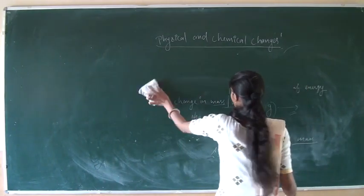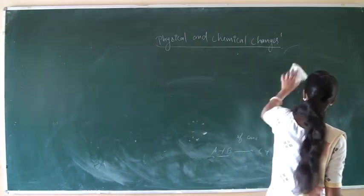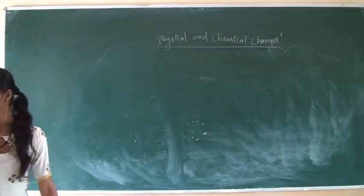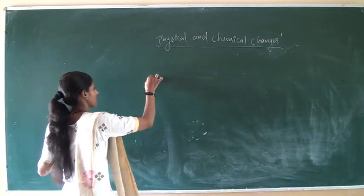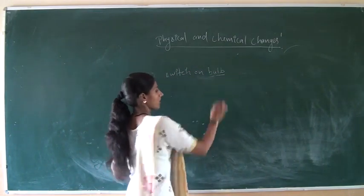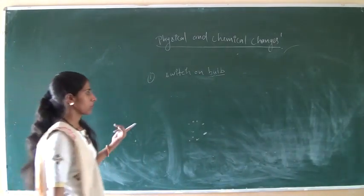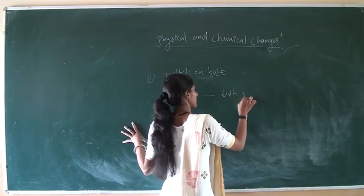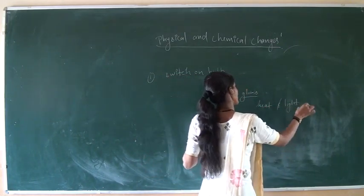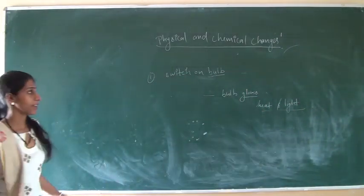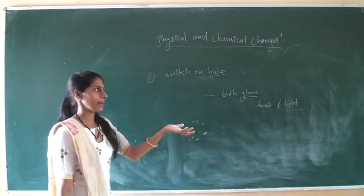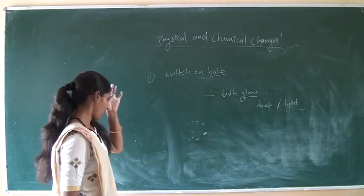Now we explain physical change by giving some examples. When we switch on the bulb, what do we observe? The bulb glows and it produces heat as well as light. This change is a physical change because no new substance is found — when we switch off the bulb, the bulb is original again.